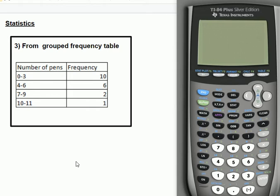A grouped frequency table is a frequency table with groups. Number of pens, for example, shows 0 to 3, meaning if you have no pens, one pen, two pens, or three pens in your pencil case, you go into this group. There are 10 people in that group, and we don't know exactly how many pens they have, which is why we have to do an estimate for the mean.